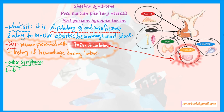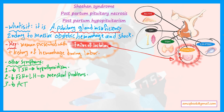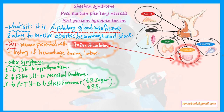Other symptoms of Sheehan syndrome include: decreased TSH leading to hypothyroidism; decreased FSH and LH leading to menstrual problems; and decreased ACTH leading to reduced stress hormone secretion, causing low blood pressure and low blood sugar.